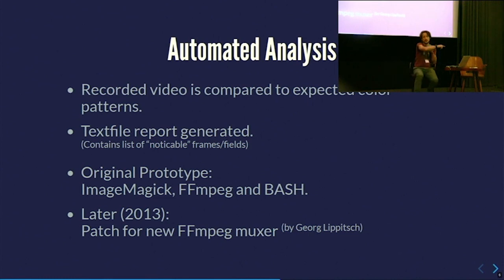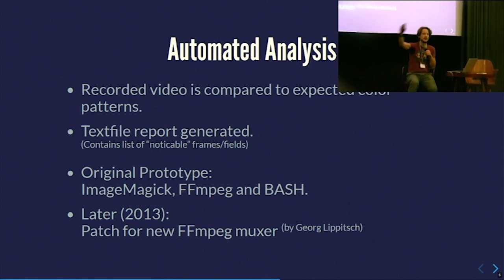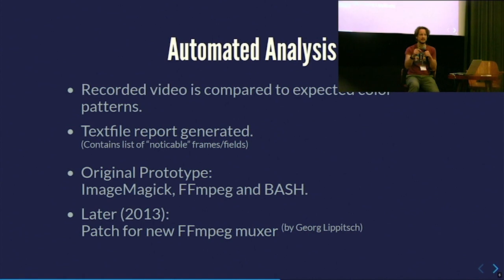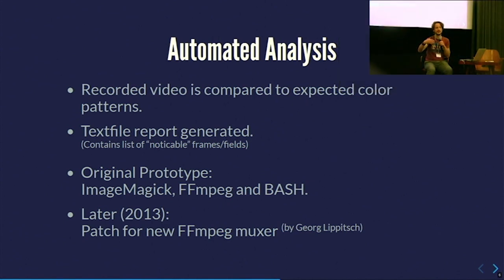You just play and record that video from one source and record it at the other end. If anything happens to that signal — insert, drop, swap, whatever — I can detect it. A text file report is generated saying: in this number of frames — like 360,000 frames for four hours of VHS — look at these frames, something's odd, because the timing's not right.